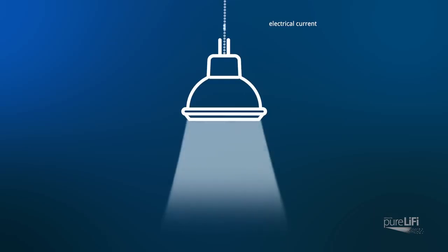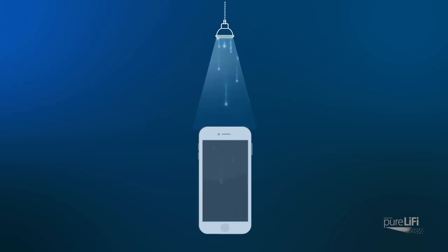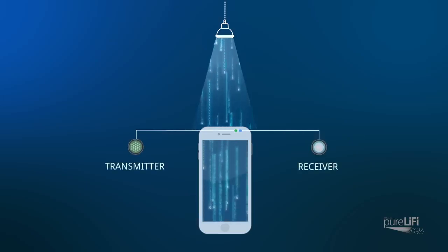Since LED bulbs are electronic devices, the current, and therefore the light, can be modulated at extremely high speeds. This can be detected by a photo detector and converted back to electrical current, therefore carrying data.